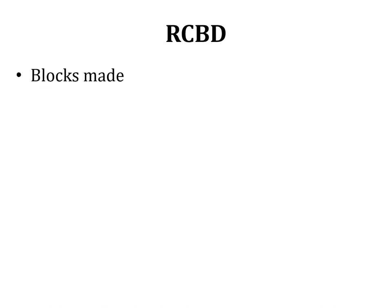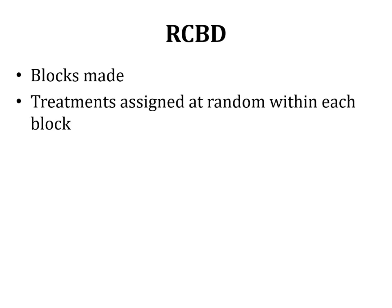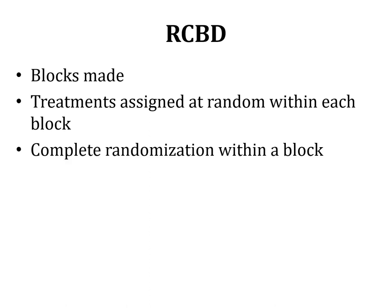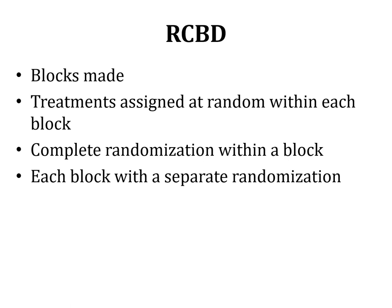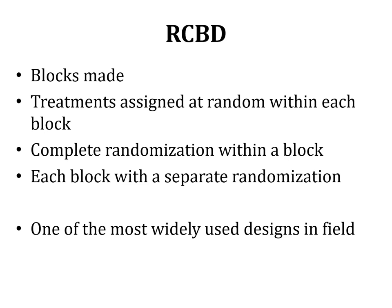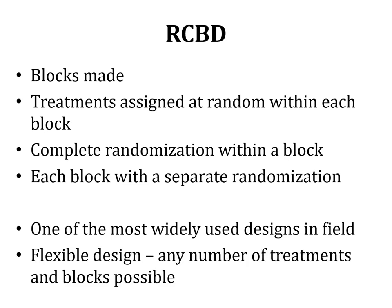In RCBD, blocks are made first, and then treatments are assigned at random within each block, ensuring complete randomization within a block. This is the main difference from CRD: in CRD, the entire field is treated as one unit with treatments applied at random, while in RCBD, we first make blocks according to the known source of variation gradient, then assign treatments within those blocks. Each block has all treatments, treatments are assigned at random, and hence the name — randomized complete block design. It is also a flexible design, allowing any number of treatments and any number of blocks.